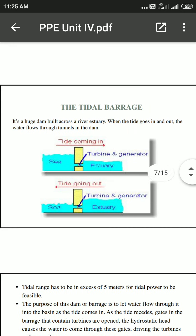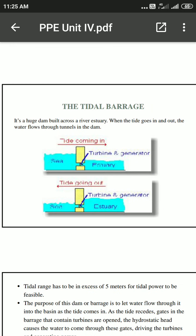How does a tidal barrage perform? There are two types of tides: high tides, which occur when the sea level is higher than the basin on the other side. The yellow-marked section represents the turbine and generator. When high tides come in from the sea, the turbine rotates. At low tide, when tides go out, the basin side has a larger height — meaning a difference exists — and the sea side is lower, causing tide generation and turbine rotation again.